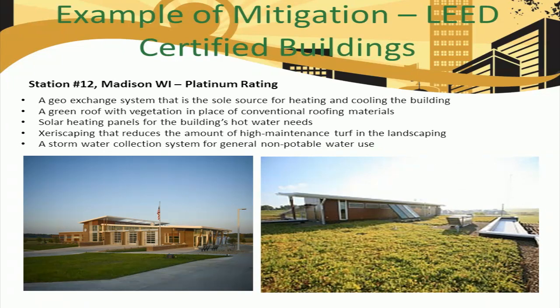A good example of a platinum-rated building is Station Number 12 in Madison, Wisconsin. This building utilizes a geothermal system for heating and cooling, a green roof, solar heating panels for hot water needs, xeriscaping that reduces the amount of high-maintenance turf in the landscaping, and a stormwater collection system for general non-potable uses such as landscape irrigation and flushing toilets.